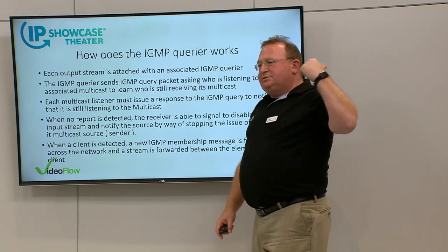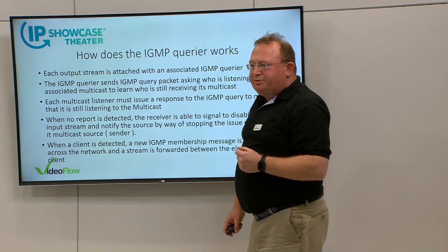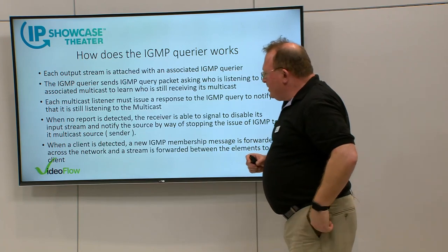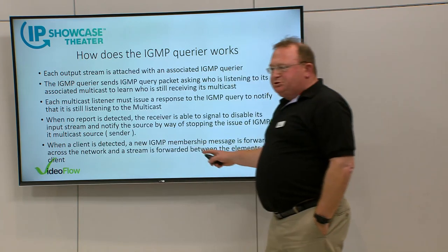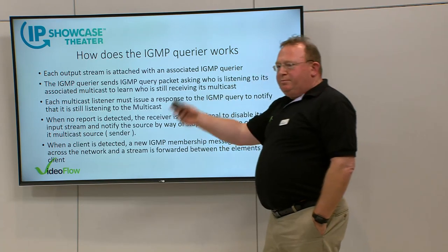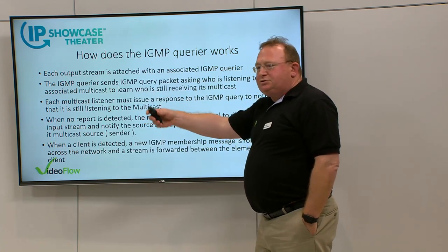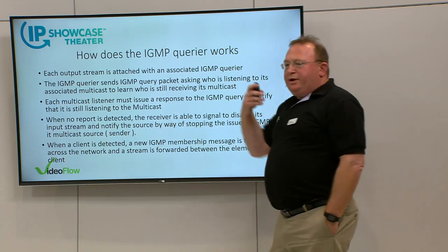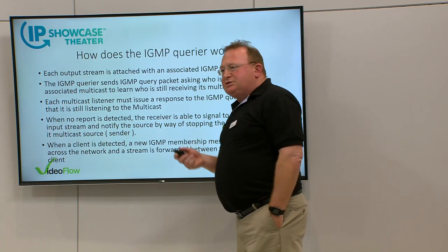The sender can then stop sending, and we get network optimization by reducing the bandwidth. When a new client comes on and sends an IGMP membership report, we propagate that to the stream IGMP querier and forward it to the original sender to command streaming. We bring the signal back, just like a multicast router would do.